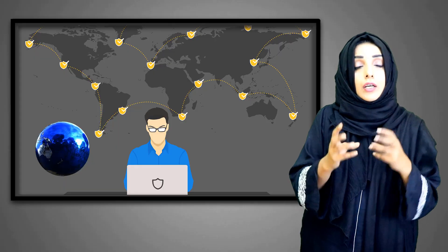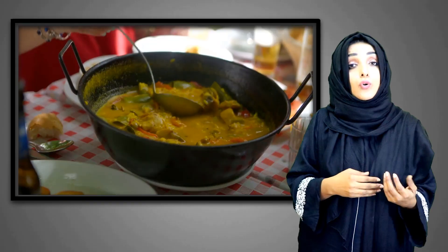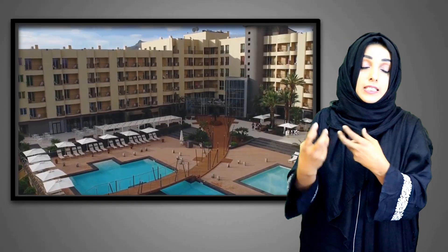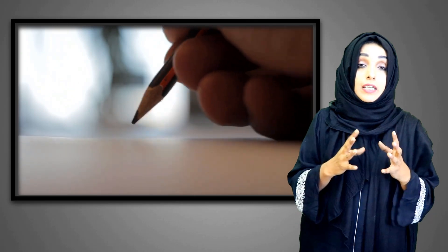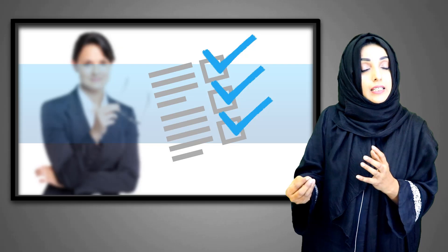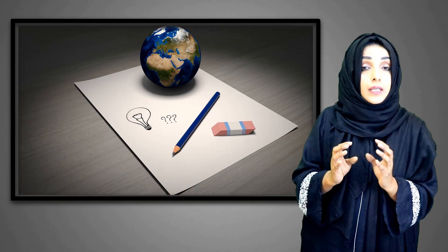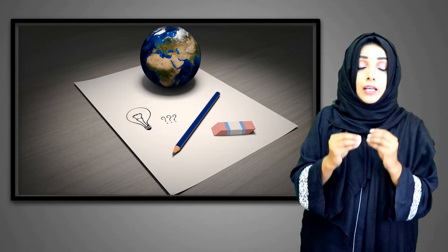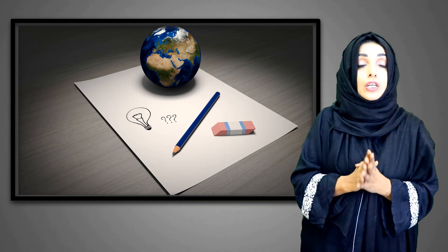For example, ek specific area hai aur us area mein aap ne yeh find out karna hai ke us area mein paai jane wali community ko kis qisam ki food zyada pasand hai. Toh definitely you will go to the restaurants, the places jo food provide karti hain, and the community, aur questions fill karwao ge. Ultimately aap conclude karo ge ke is specific area mein is taste ko zyada like kiya jata hai. Yeh ek aisa knowledge tha jis ko already kisine invent nahi kiya tha, so aap ne apna part is mein put kiya — even though it was a little bit — lekin kyunke yeh ek new information thi, hum keh sakte hain ke it is a research.